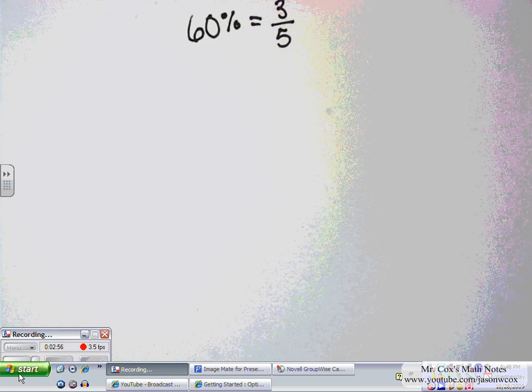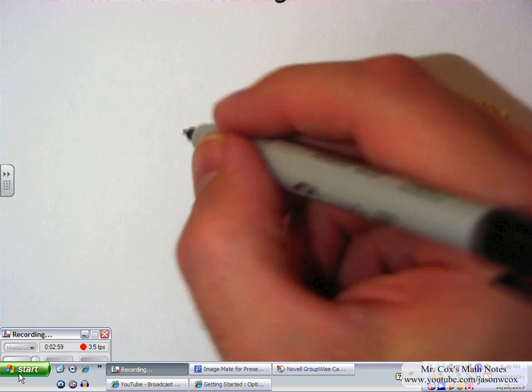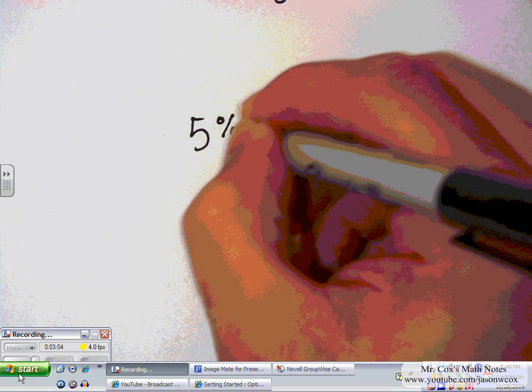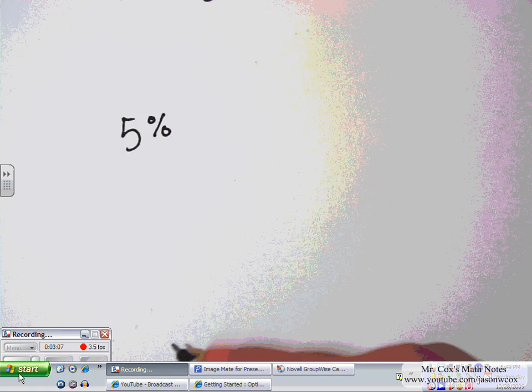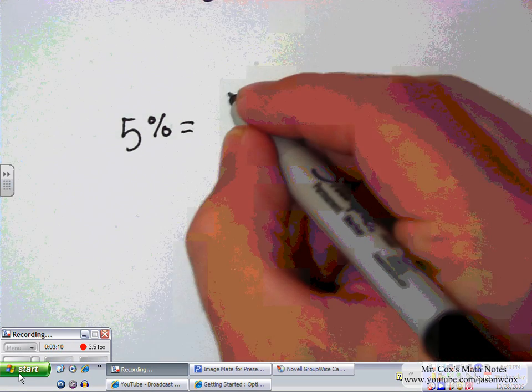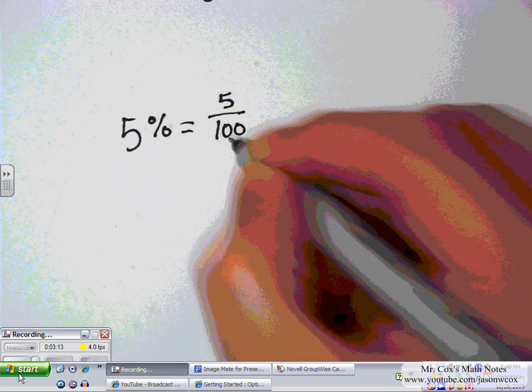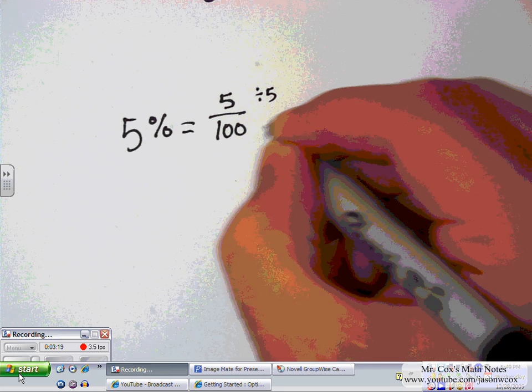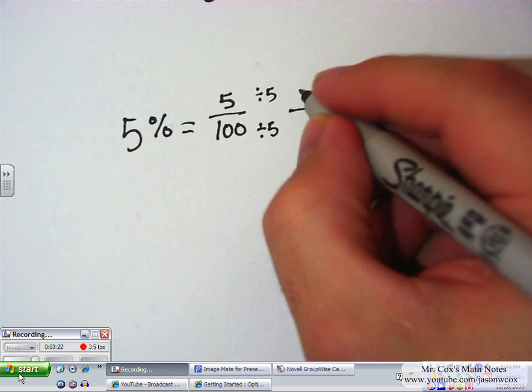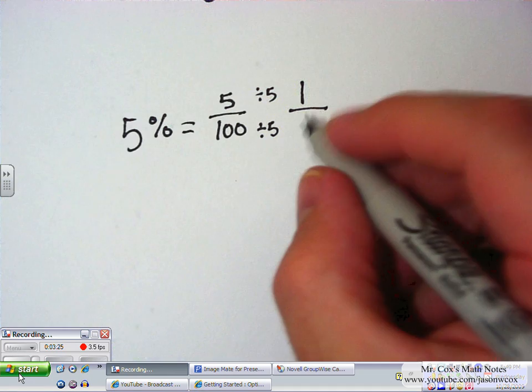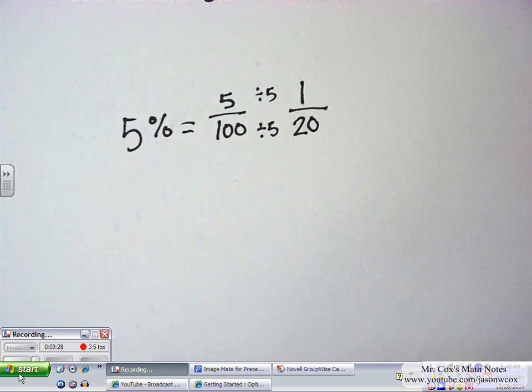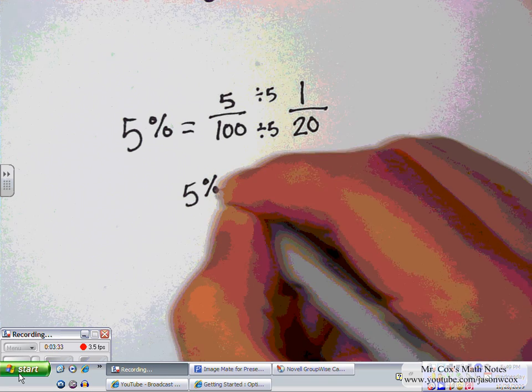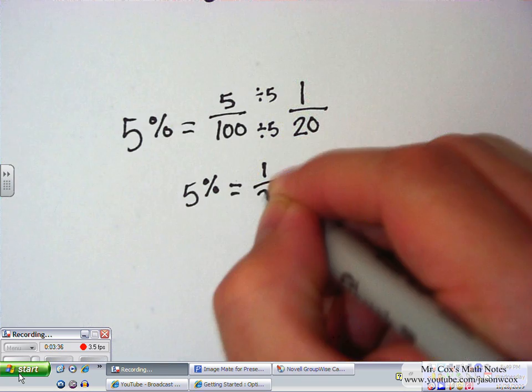Let's try one more. This time, let's say 5%. Now, 5% is going to be equal to 5 over 100. So, again, I'm going to reduce. 5, I can divide by 5, as well as 100. I can divide by 5. 5 divided by 5 is 1. 100 divided by 5 is 20. So I end up with 5% equals 1 over 20.